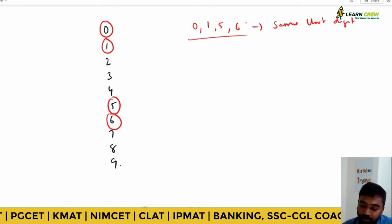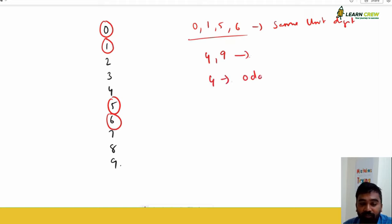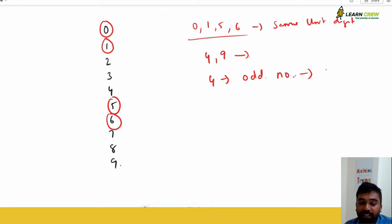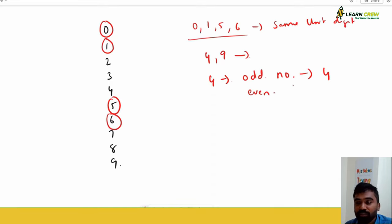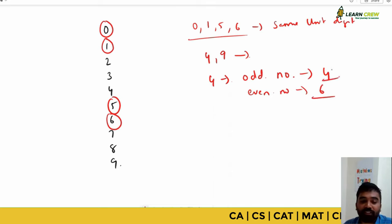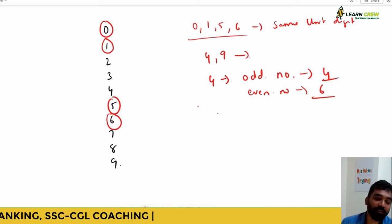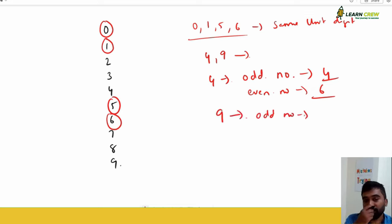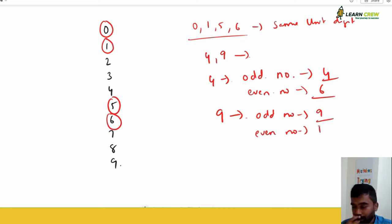Whenever you have four and nine: for four, when the power is an odd number — four to the power of one is four, four to the power of three is 64 — the unit place ends with four. When the power is even — four squared or four to the power of four gives 256 — the unit place ends with six. For nine: if it is an odd power, nine cubed is 729, unit place ends with nine. If it is an even power, it ends with one.